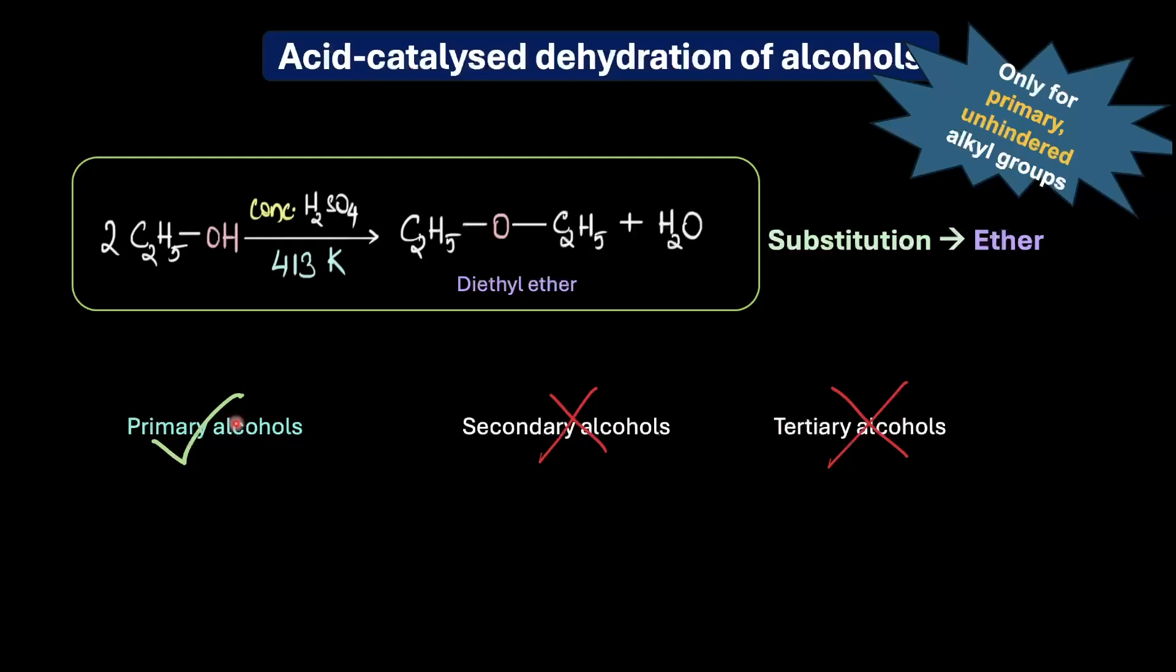And because of that they would rather eliminate the water molecule via an E1 elimination mechanism to give alkenes almost exclusively. Thus dehydration to form ethers is unsuccessful with these substrates as elimination almost always predominates. And that's not the only limitation of this method.